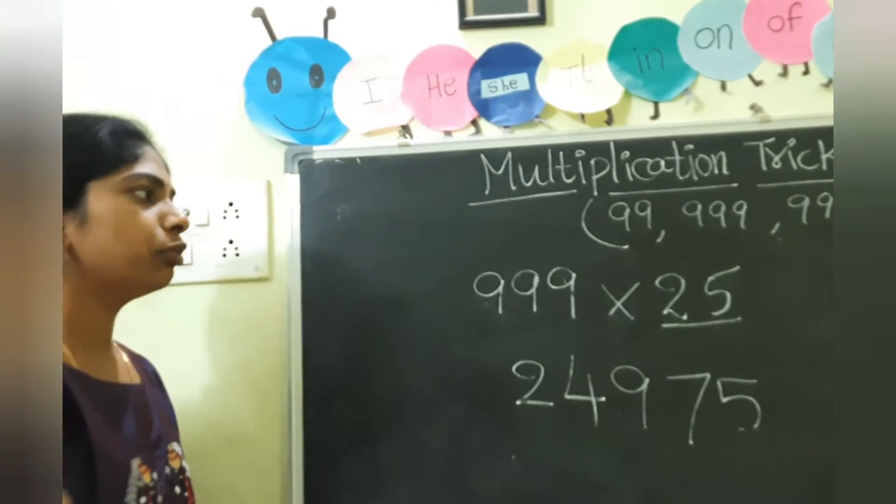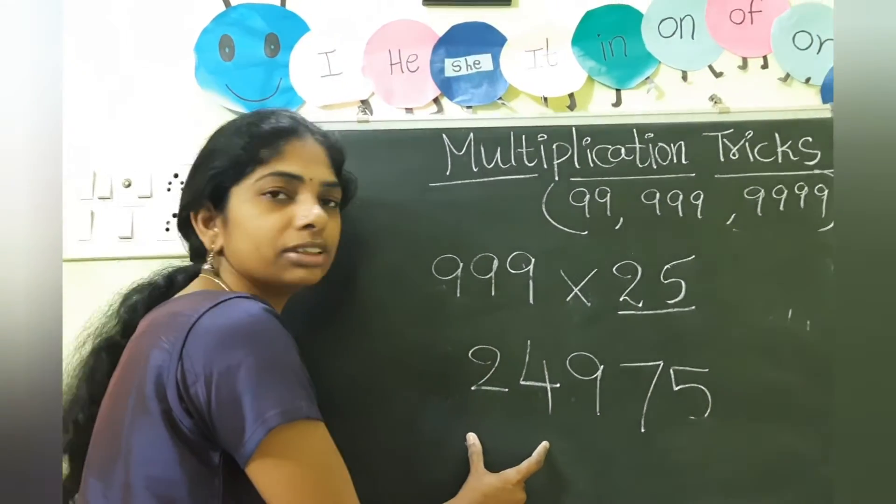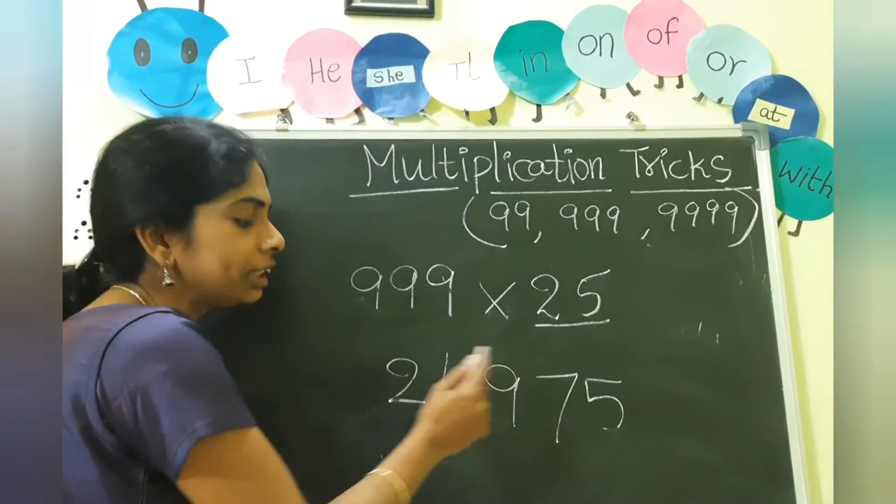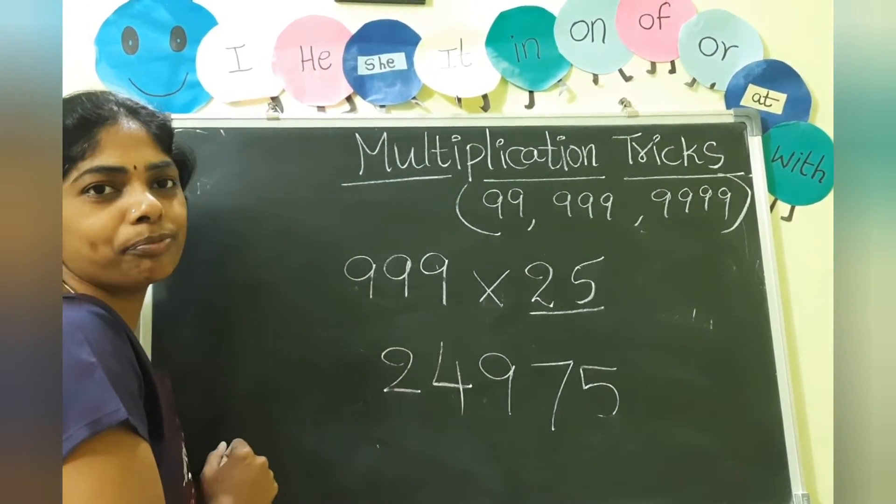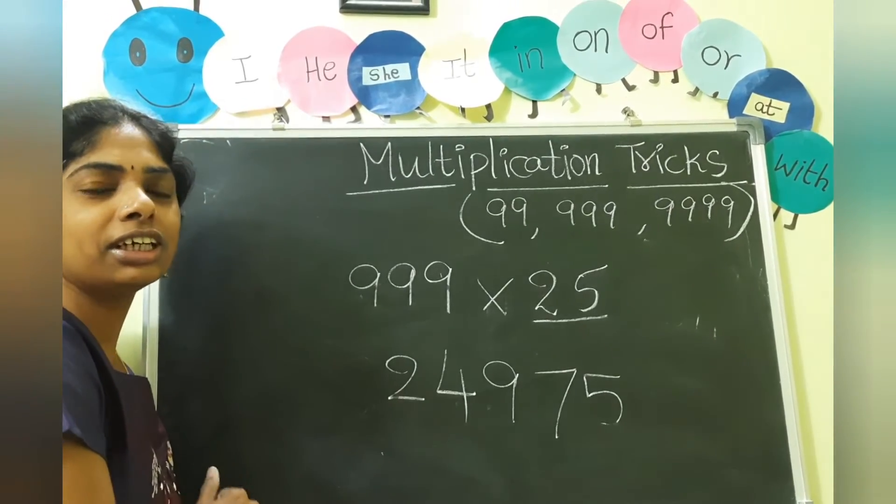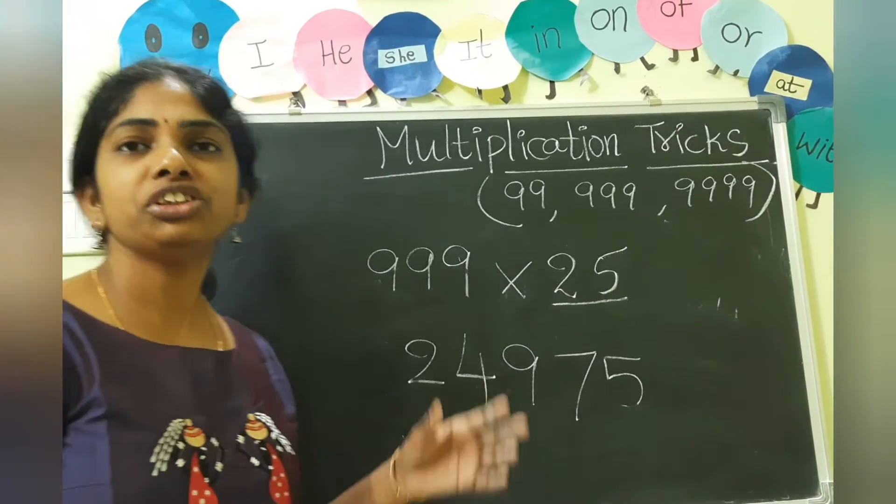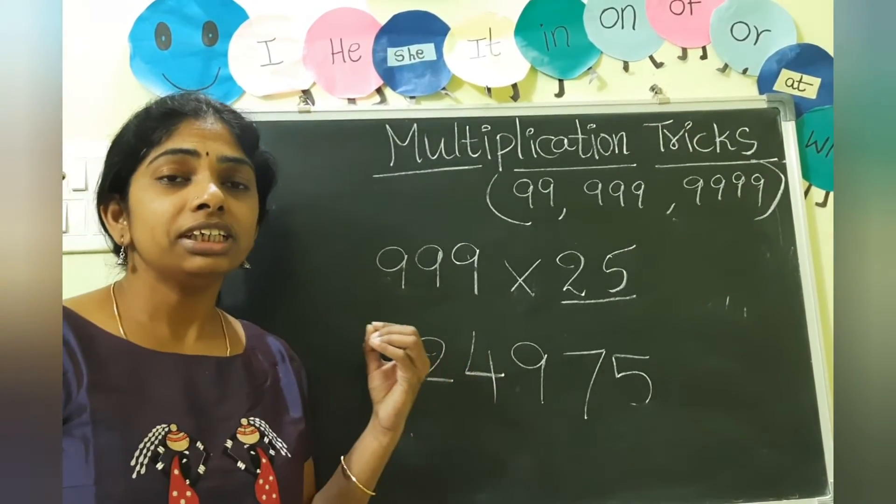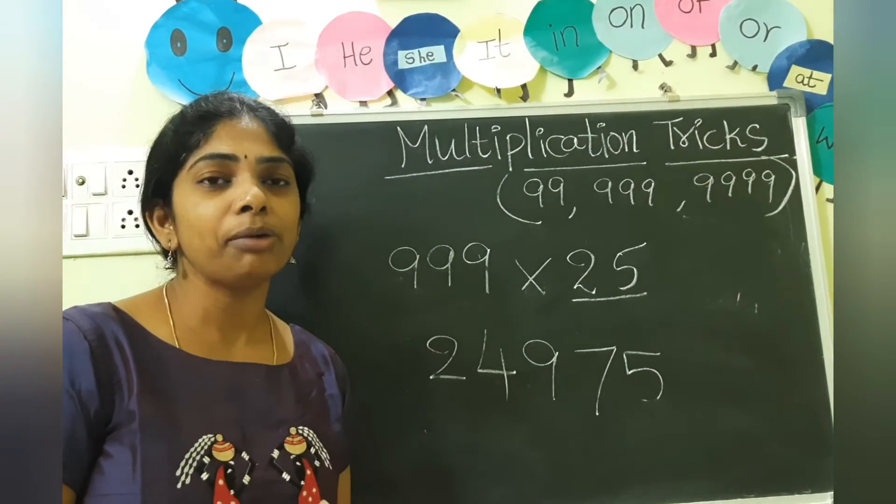So for this type of question, we need to do like this. Directly we can write the answer. So in front we need to put 0 and the process is same. So if in entrance exams the questions are like this, we can easily solve without calculating all the things. It will save our time.